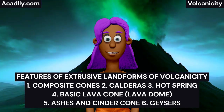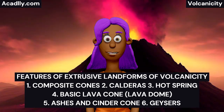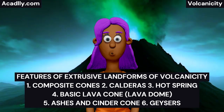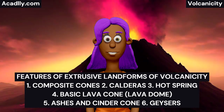Calderas: These are huge craters of volcanoes, often surrounded by the shattered remains of a cone. A caldera often results from a violent eruption of a volcanic cone, such that the huge crater is often several kilometers across. When water accumulates in a caldera, a lake is formed. Examples include Lake Toba in Sumatra and Panshan Lake in Pangsho near Jos.